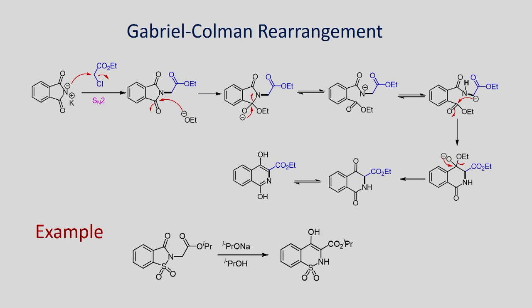Another example involves the Gabriel-Coleman rearrangement, where carbon-nitrogen bond construction proceeds through intramolecular cyclization. When you react with alpha-chloroethyl acetate and then react with ethoxide, addition takes place giving an ester derivative. From the enolate formed, intramolecular cyclization gives an intermediate, which gives the amide, which can convert into the isoquinoline derivative as a product.